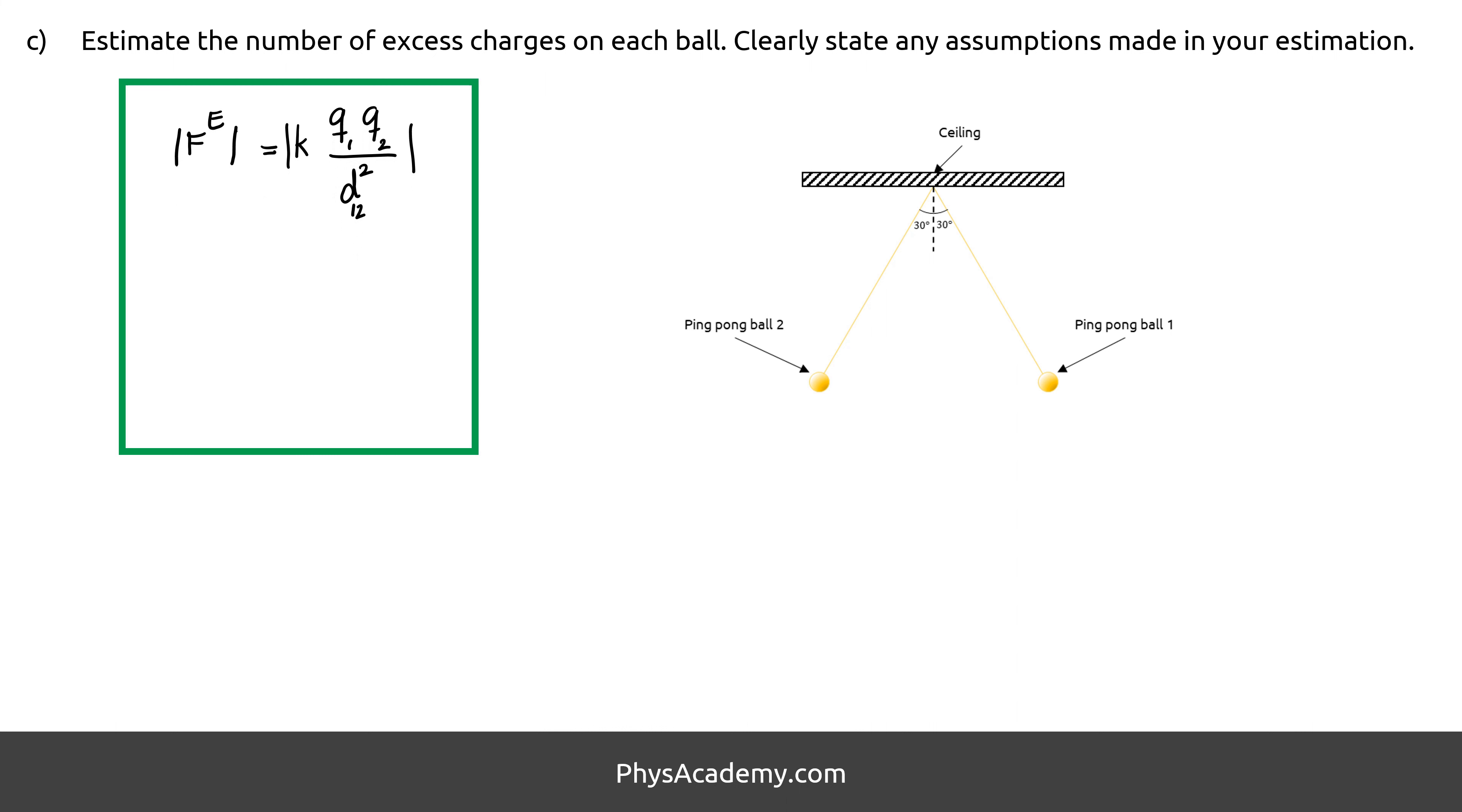Starting with the original Coulomb's equation, we know that both charges are the same type and have the same magnitude, so instead of Q1 and Q2, we can call them Q.